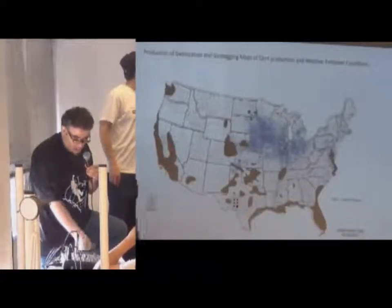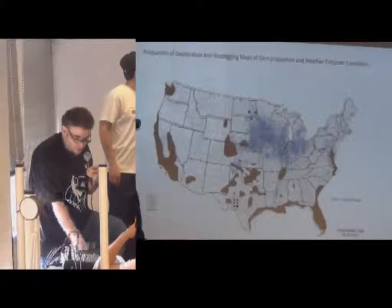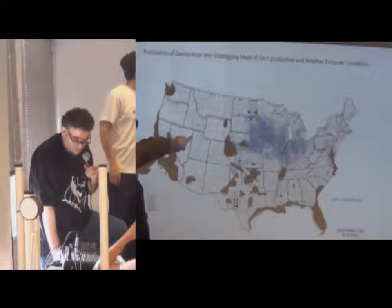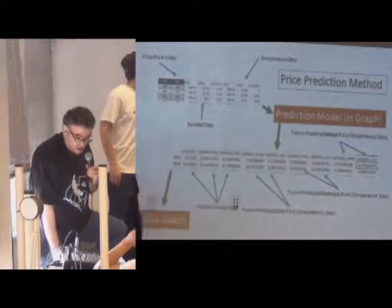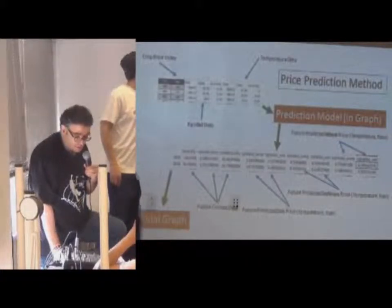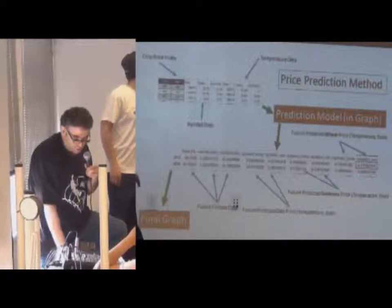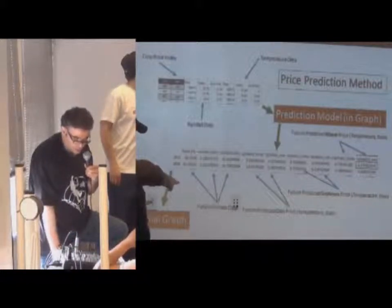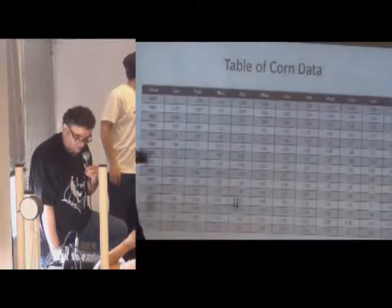Then we could overlay the maps to see where possible risks are for the farmers. And we use prediction models where we take climate data and temperature data to measure what is going to happen in the future for the farmers.